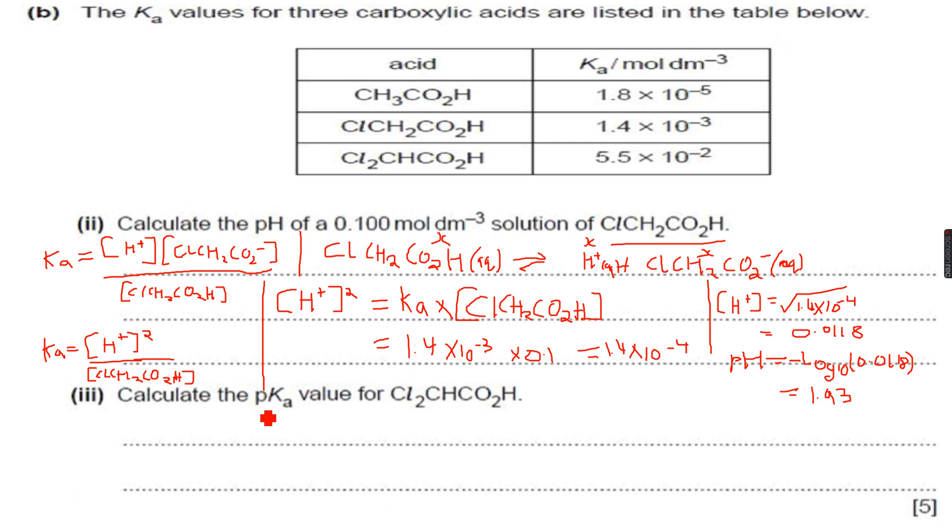Now the second part says calculate the pKa value for 2,2-dichloroethanoic acid. So pKa is simply negative log 10 of Ka, which is also equal to 1.26, because I put the value of Ka which is given over here. First, let me first put the value of Ka before giving you the answer.